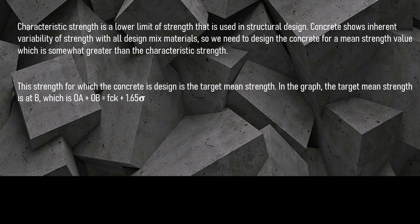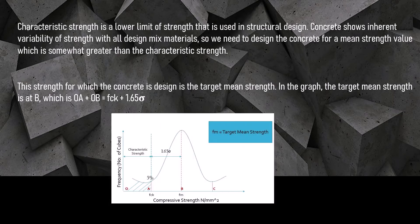So, this strength for which the concrete is designed is the target mean strength, and in the graph, the target mean strength is at B. Or, in other words, the mean strength required is at B, which is OA plus OB, i.e. Fck plus 1.65 sigma.